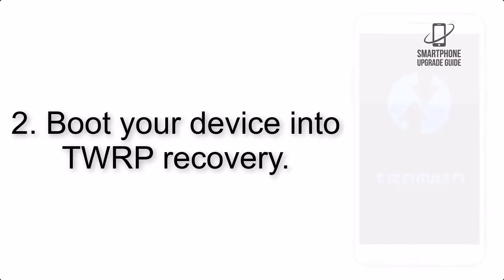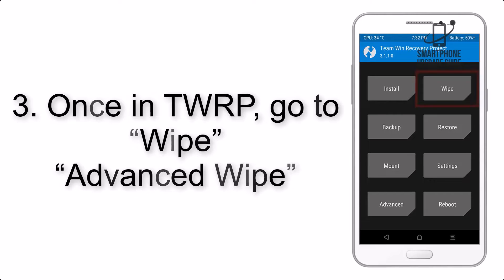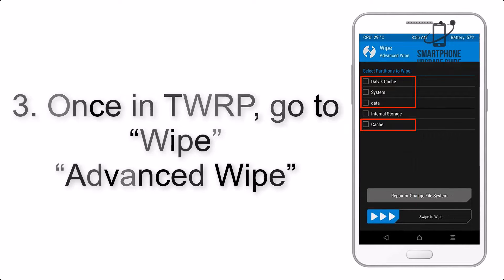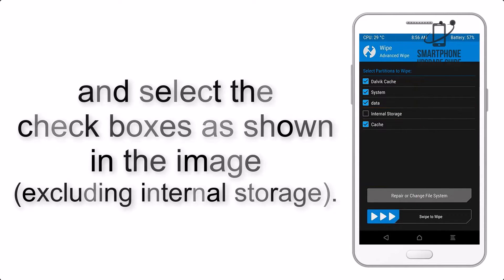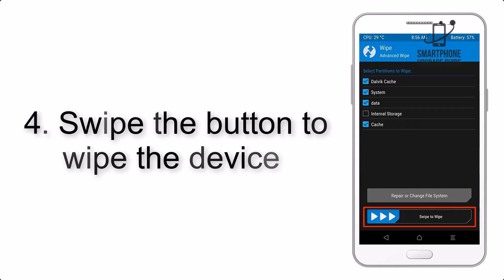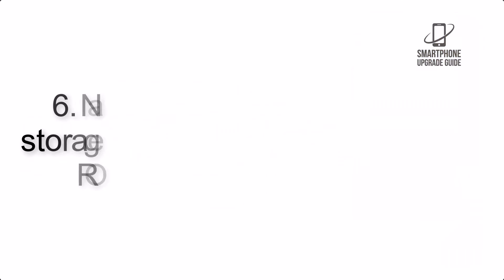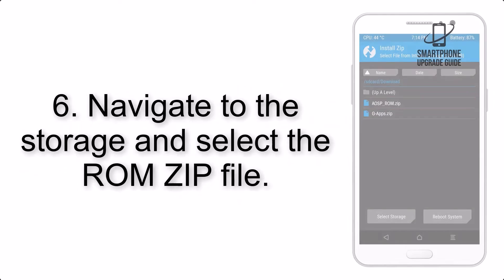Step 2: Boot your device into TWRP recovery. Once in TWRP, click on Wipe, then Advanced Wipe, and select the checkboxes as shown in the image, excluding internal storage. Step 4: Swipe the button to wipe the device.